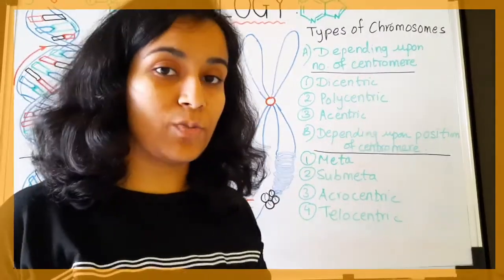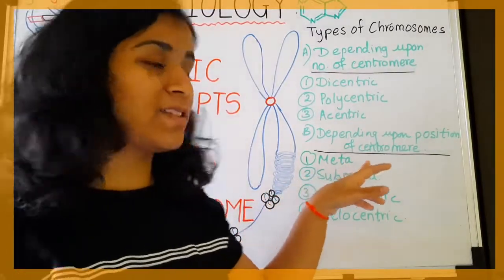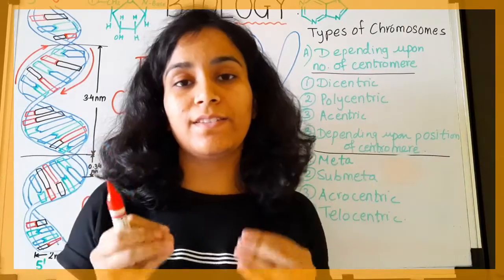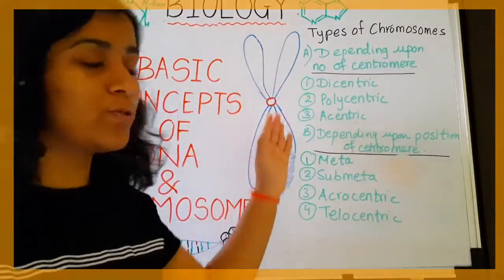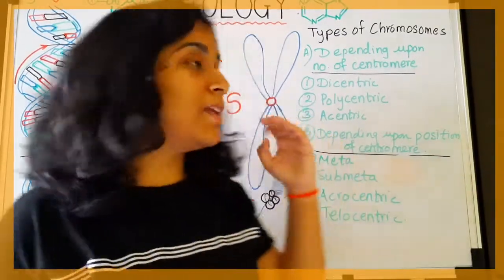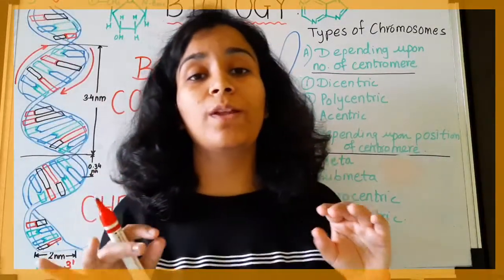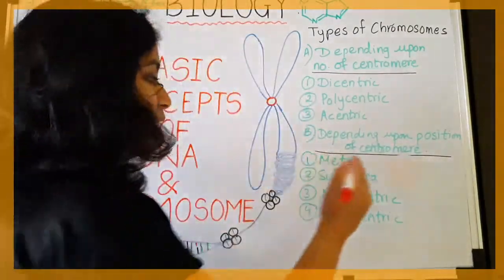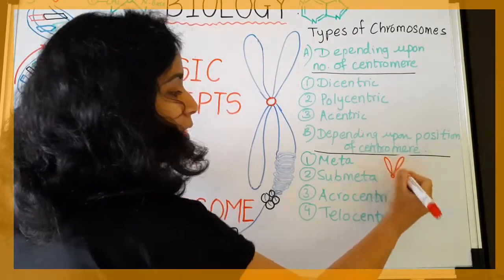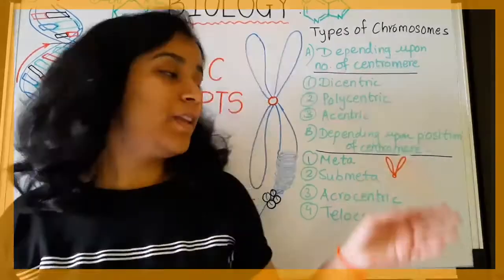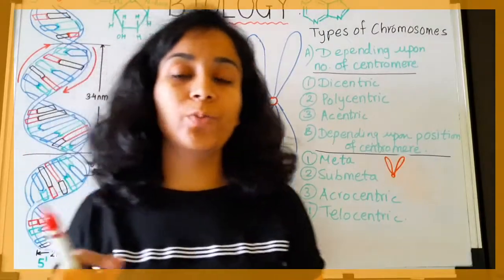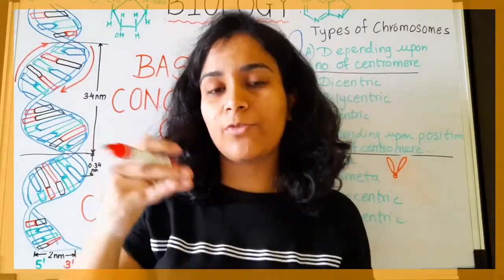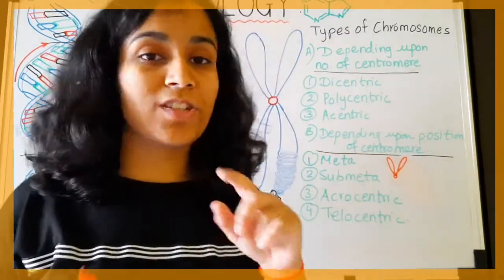First is metacentric — here, the centromere is placed exactly at the center or midpoint of both chromosome arms, so that the length of both arms is equal to each other. Because of this, it looks like the letter V. Sub-metacentric chromosomes have the centromere slightly apart from the midpoint.